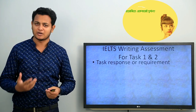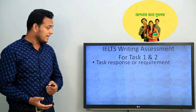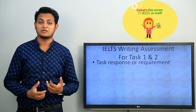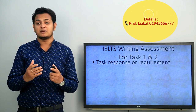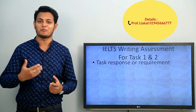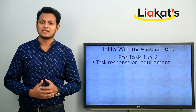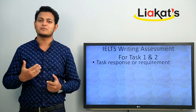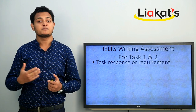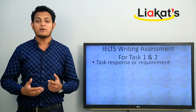For GT Task 1, there are different kinds of letters: formal, informal, business, complaint letter, and personal letter. The examiner checks whether you have understood the task. For Task 2, you need to present arguments — you may have to give your opinion, discuss both views, or describe a problem-solution situation.